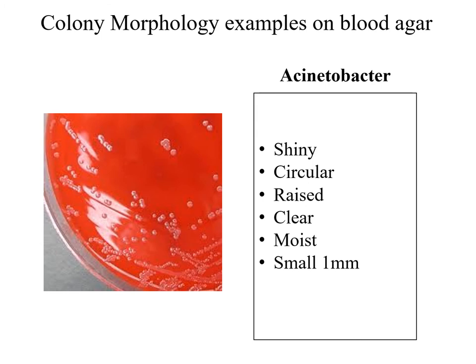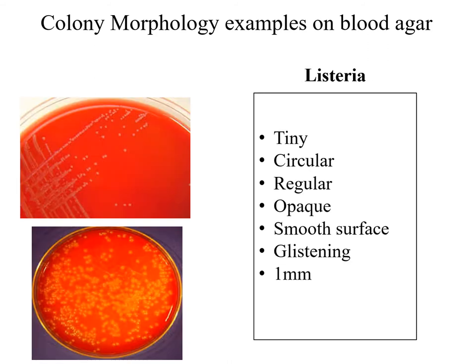Another example is Acinetobacter. As we can see here, the colonies are shiny, circular, raised, clear, and moist. They are small in size, around 1 mm in diameter.